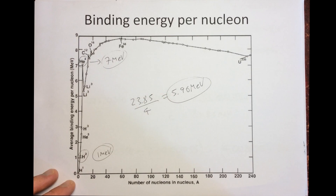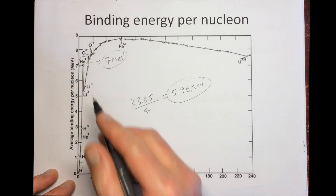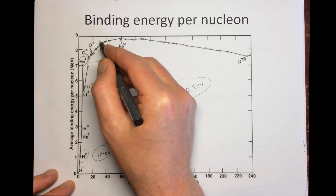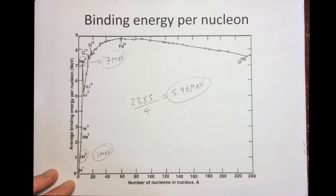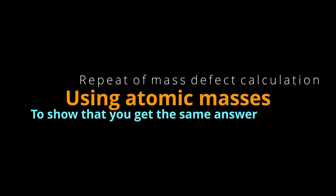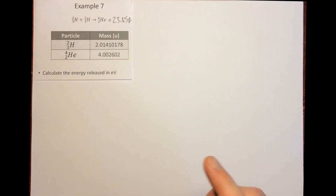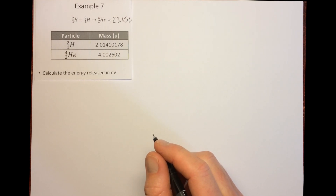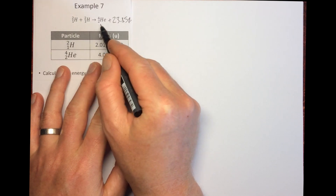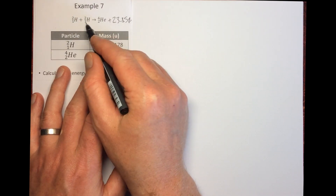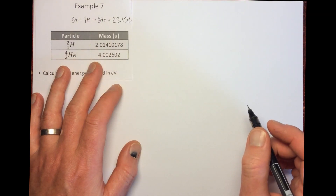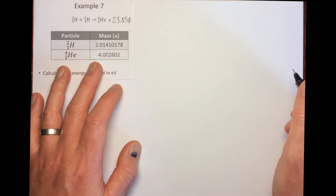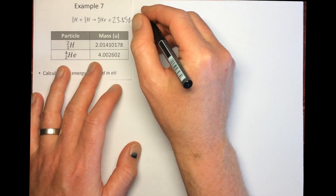This is an energetically favorable process, and the helium nucleus is more stable. Helium nuclei could then join together to make a heavier nucleus if it results in a gain in binding energy per nucleon. Now I'll show you can do exactly the same calculation without taking account of the electrons, because there are two electrons on each side of the equation — they cancel out.